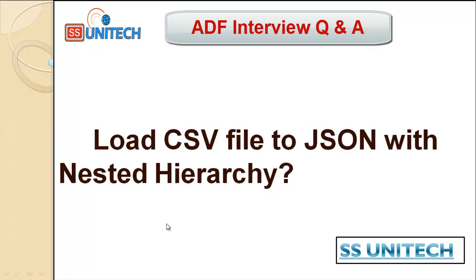Welcome to SSUnitech, Sushil this side. Today we are going to see how we can load data from a CSV file to JSON with nested hierarchy — the formatted JSON we want to generate from a CSV file. Before going forward, if you haven't watched the last video of this series, I strongly recommend watching it, as this is a continuation. In that video we discussed how to load data into a CSV file from a JSON with nested hierarchy; here we are doing the reverse. Let me quickly show the source and the formatted JSON we want to generate.